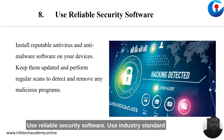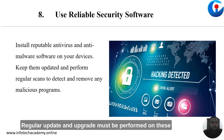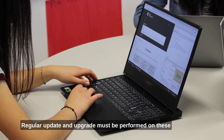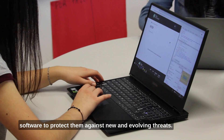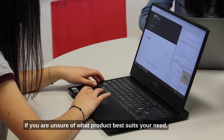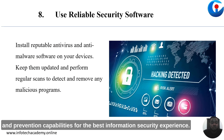Use reliable security software. Use industry-standard antivirus and anti-malware software on all systems to prevent malicious infections. Regular updates and upgrades must be performed on these tools to protect against new and evolving threats. If you are unsure of what product best suits your needs, always make sure your anti-malware has threat detection and prevention capabilities for the best information security experience.